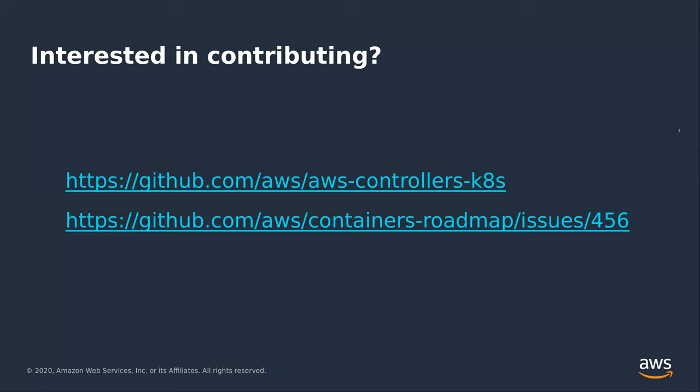Will there be a performance penalty for using ACK because of two hops — one to ACK and then to native AWS? No, there is no performance penalty. There actually isn't two hops. The Kubernetes user is communicating with the Kubernetes API, and the ACK service controller is communicating with the AWS API — so it's not like the Kubernetes user is communicating with the AWS API directly. They only talk to the Kubernetes API, and then the ACK service controller is the thing communicating with the AWS API.